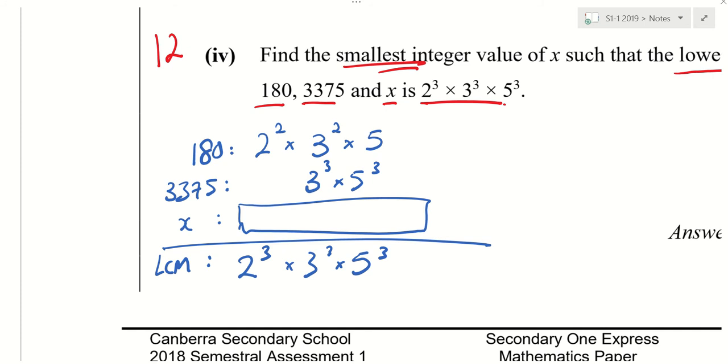Who don't understand how to select LCM? Oh, understand? Then I'll test you. So, Jia Jun, I know these 3 numbers, these 3 numbers, I must choose 2 cubed. So the first one is 2 squared. The second one doesn't have 2. The third one, can you make a guess what is the third one so that I can choose 2 cubed? 2 cubed. So the third one must be 2 cubed.